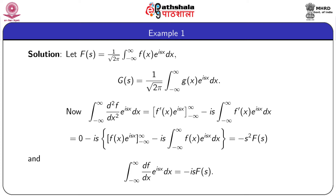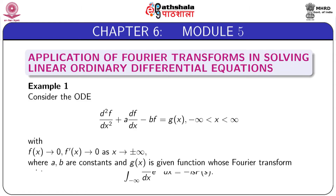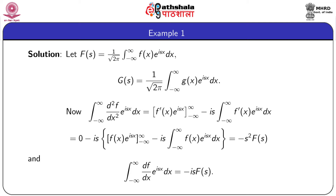This integral is again integrated by parts, giving 0 for the boundary term minus is·[f(x)·e^(isx) from -∞ to +∞] - (-is)·∫f(x)·e^(isx) dx. From the condition of the differential equation, f(x) also tends to 0 as |x| → ∞, so the first term is 0, and we finally get -s²·F(s), where F(s) is the Fourier transform of f(x). So this integral evaluates to -s²·F(s).